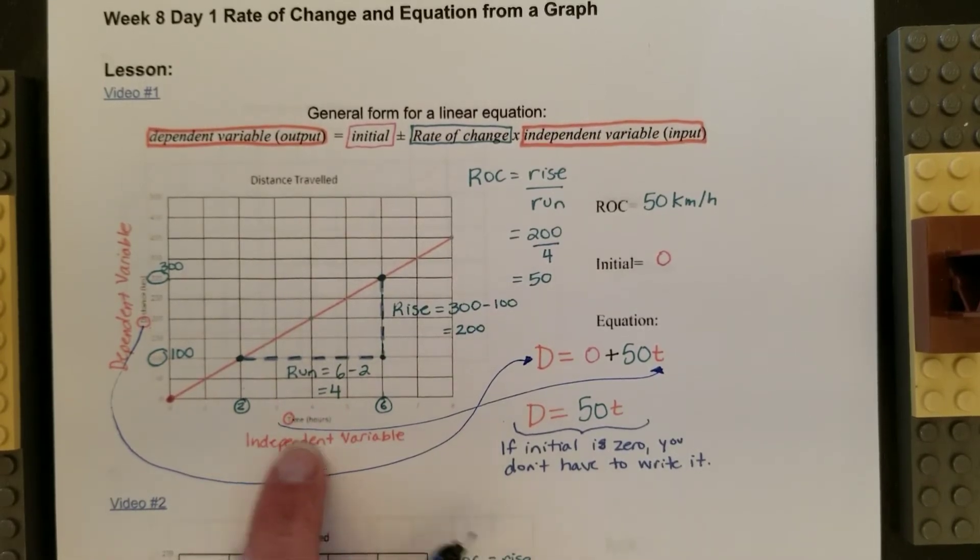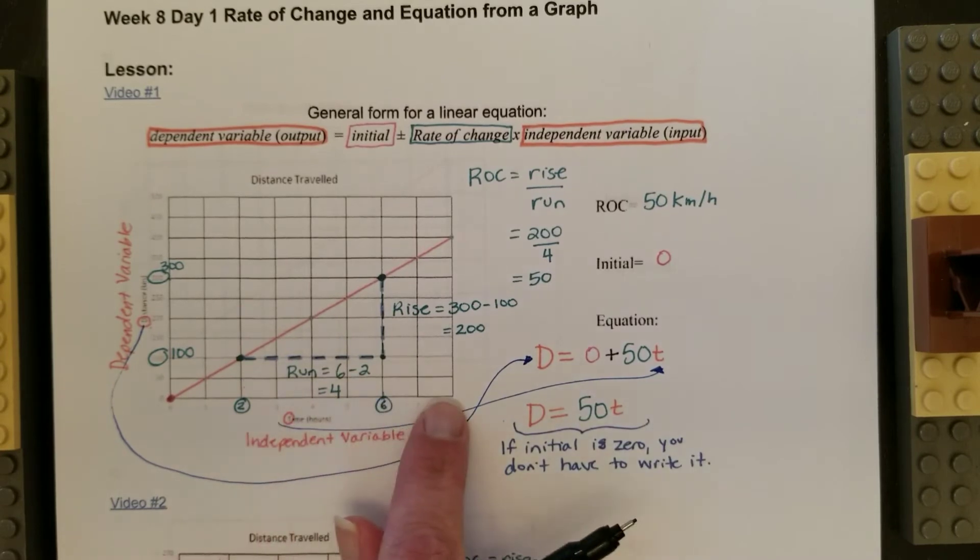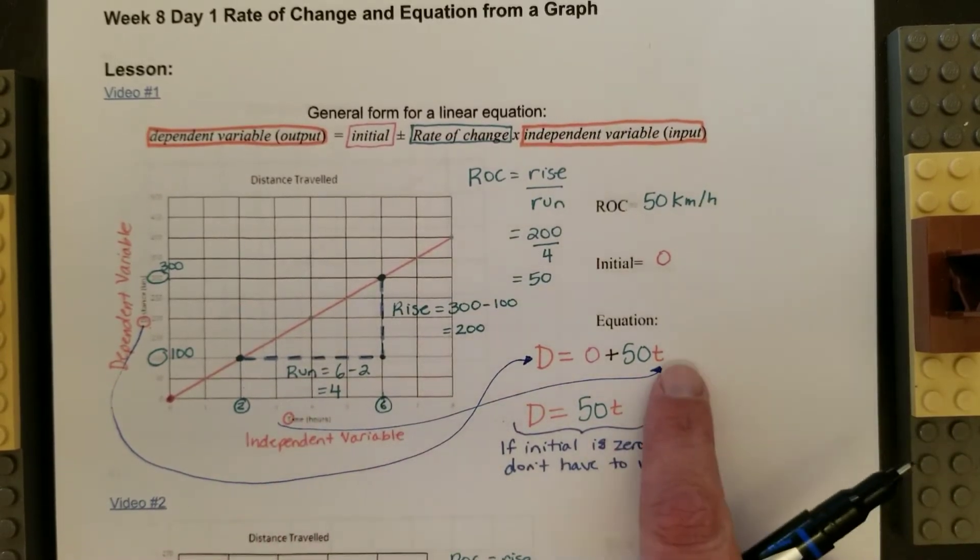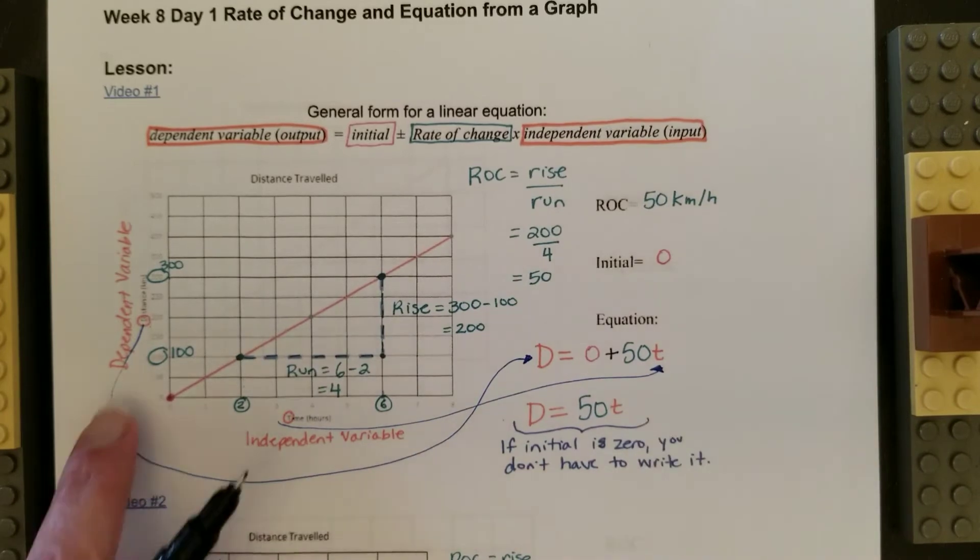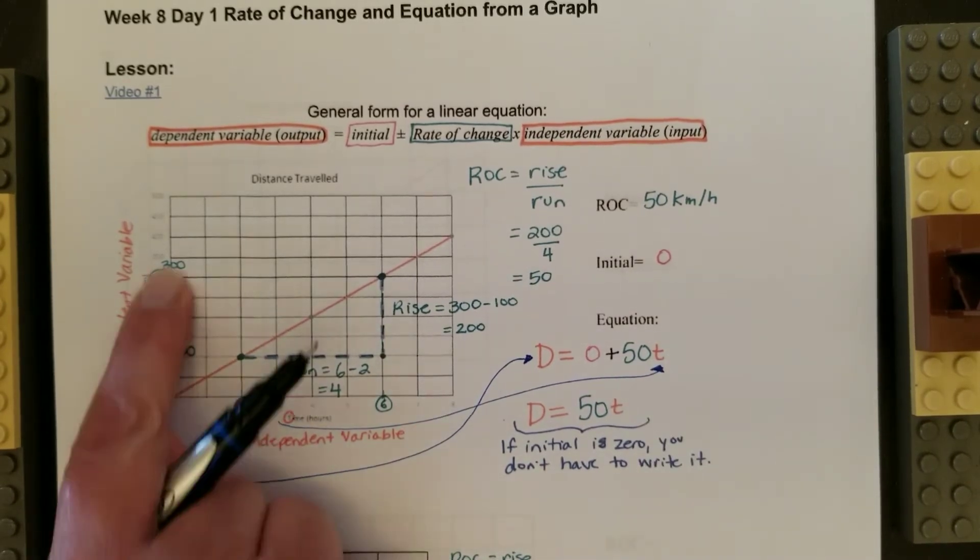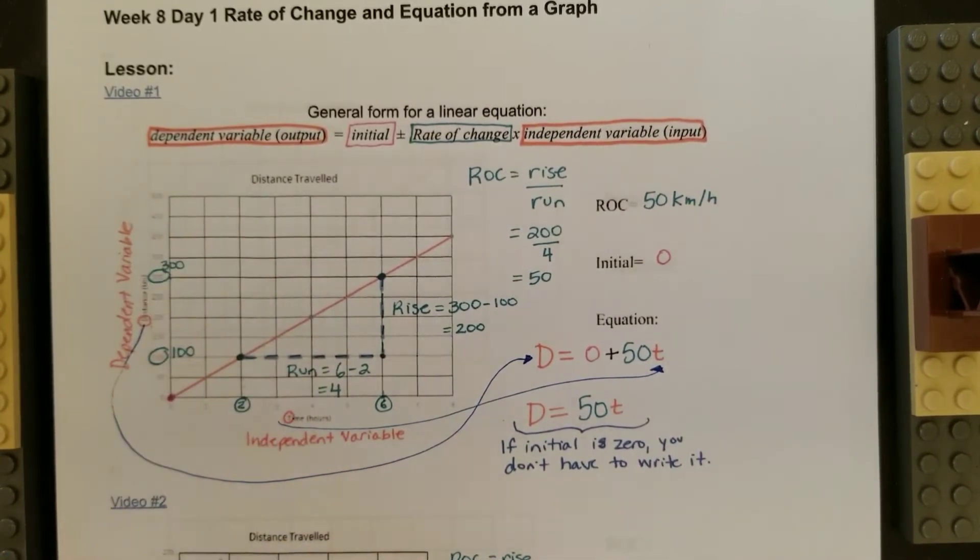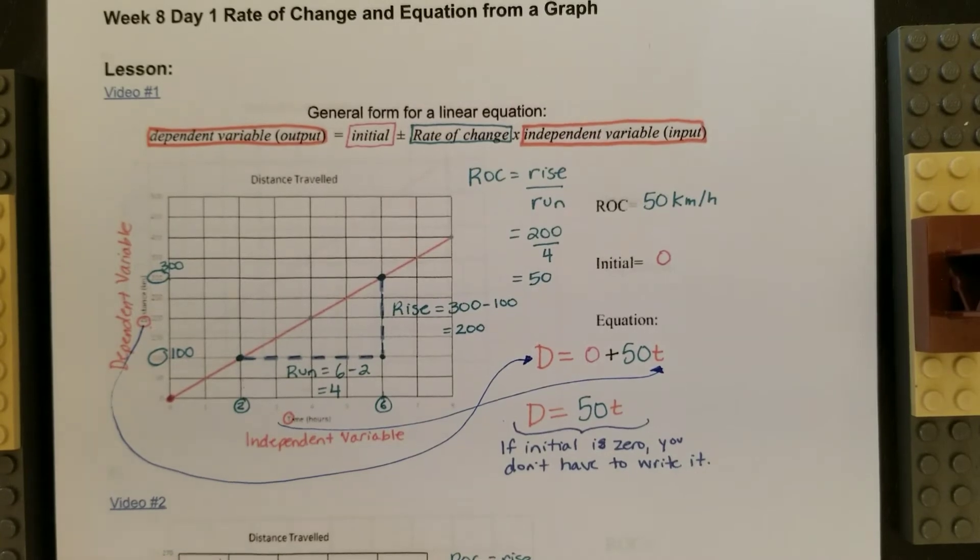So you figure out independent or dependent by its location on the graph or in the table. So the independent variable is always on the horizontal of the graph or the left hand column of a table and it goes at the end. The dependent variable is on the vertical, the up and down of a graph, or the right hand column of a table.